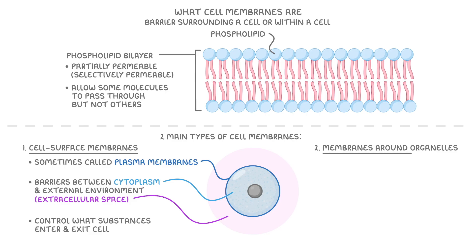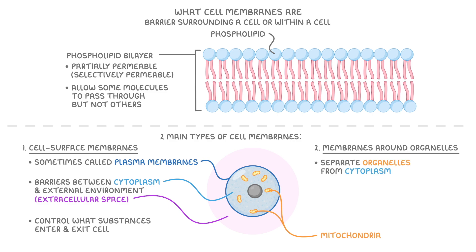On the other hand, membranes around organelles, like those that surround organelles like these mitochondria, separate these organelles from the cytoplasm. This separation is called compartmentalisation because it divides the cell into different compartments and helps it to manage its various functions efficiently.